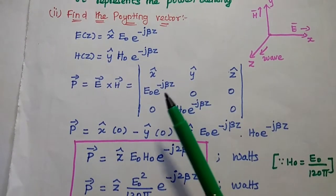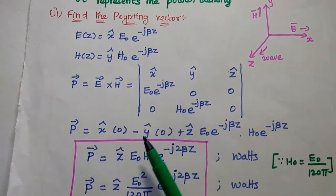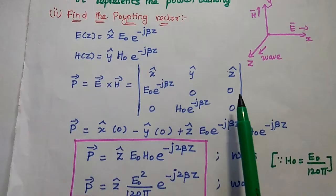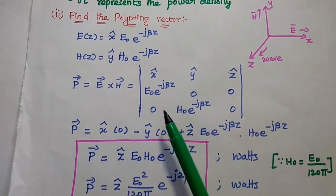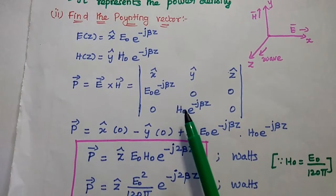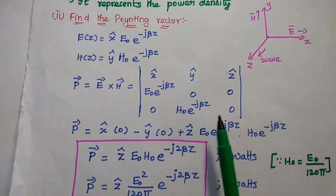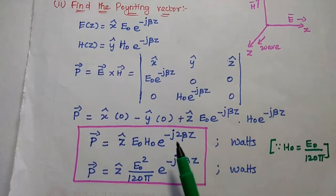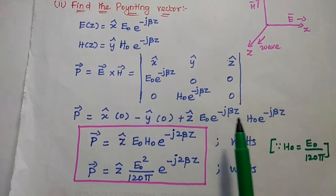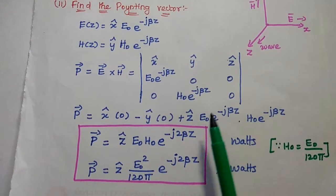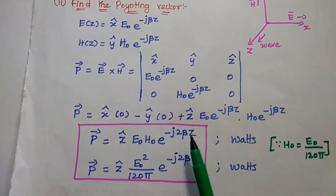Evaluating the matrix product: the x-component is 0, the y-component is also 0, and the z-component gives E₀ e^(−jβz) multiplied by H₀ e^(−jβz) minus 0. So the Poynting vector is ẑ · E₀ · H₀ · e^(−jβz) · e^(−jβz), which can be written as ẑ · E₀ · H₀ · e^(−j2βz).